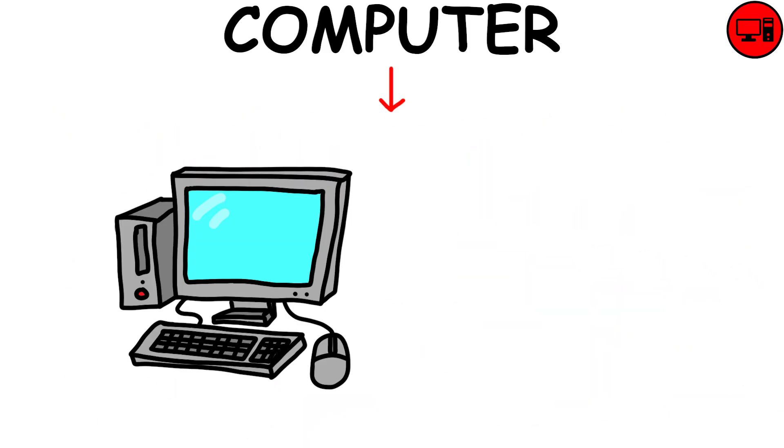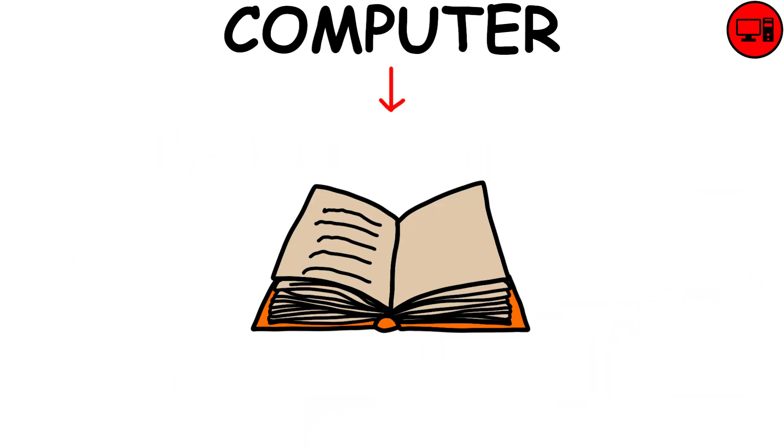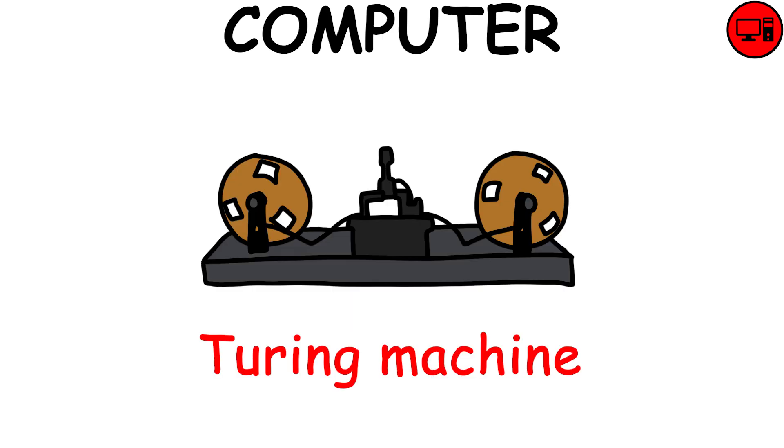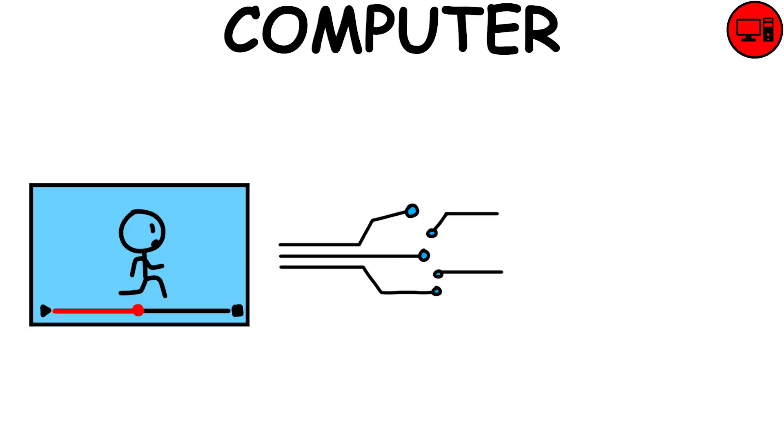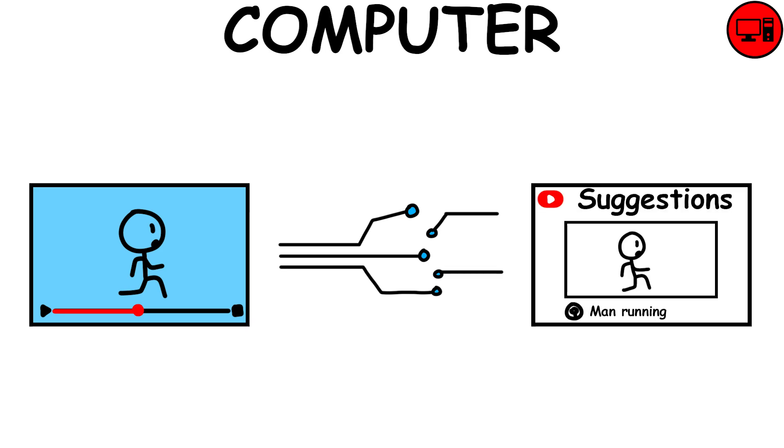The computer operates like a tape holding ones and zeros, with a device capable of reading and writing to it. This concept, known as a Turing machine, theoretically can compute anything, from graphics in a video to algorithms suggesting the video itself.